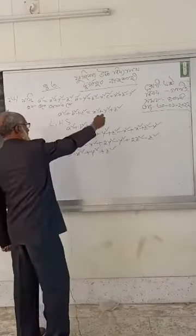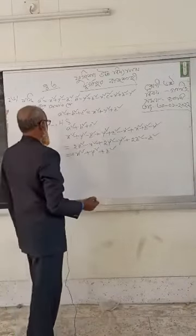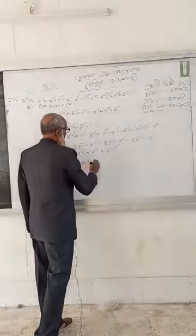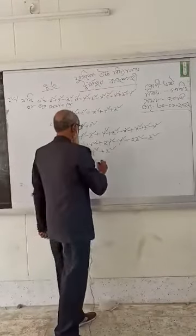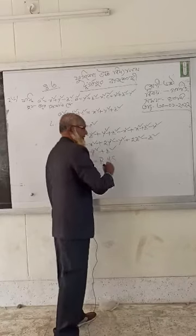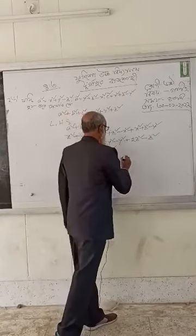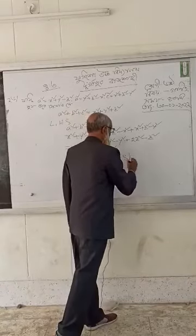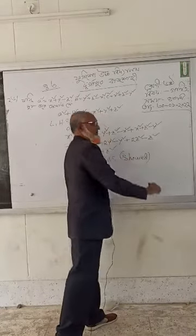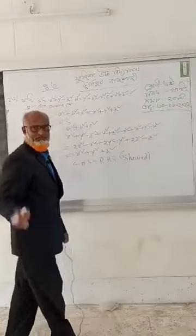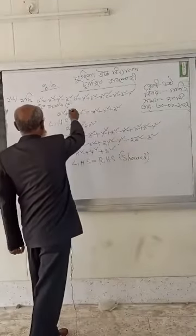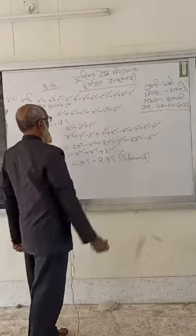Now we have the right hand side. Left hand side is equal to right hand side. Therefore the identity is proved: A square plus B square plus C square equals X square plus Y square plus Z square.